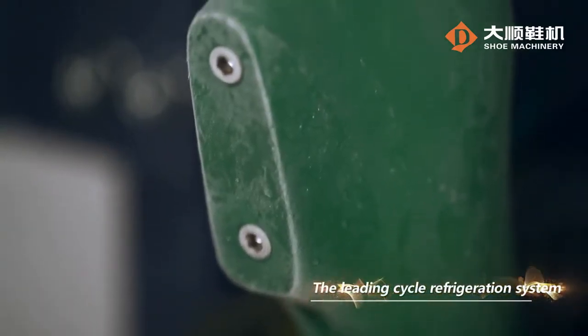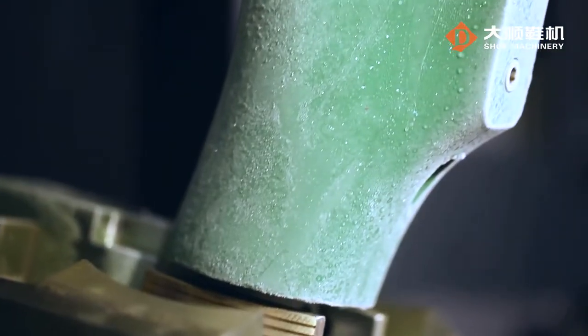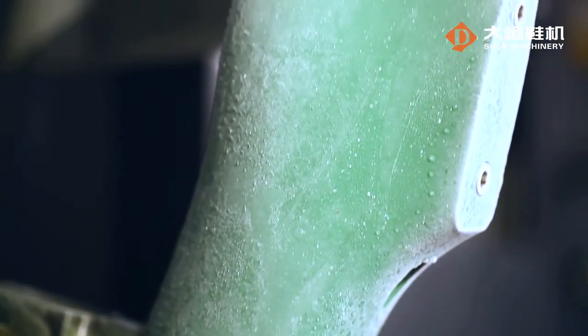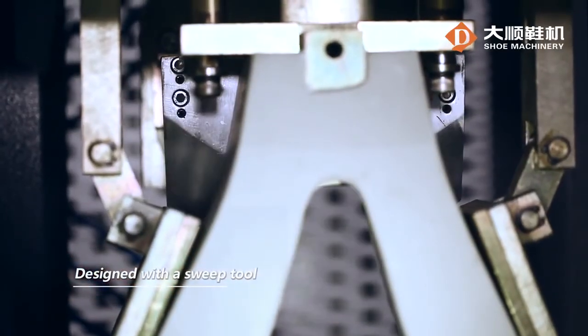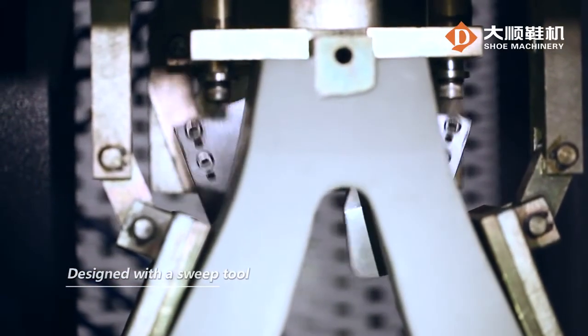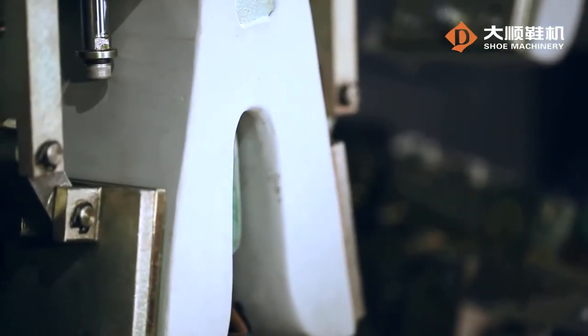With the leading circle refrigeration system, the temperature of the cold aluminum last may drop below minus 10 centigrade. Designed with a sweep tool, the external edge of the shoe may be folded inward for better lasting.